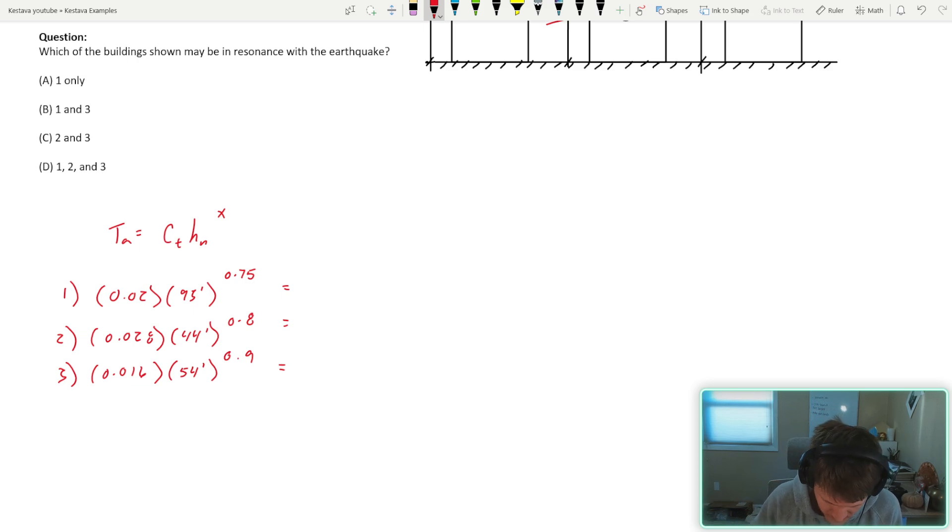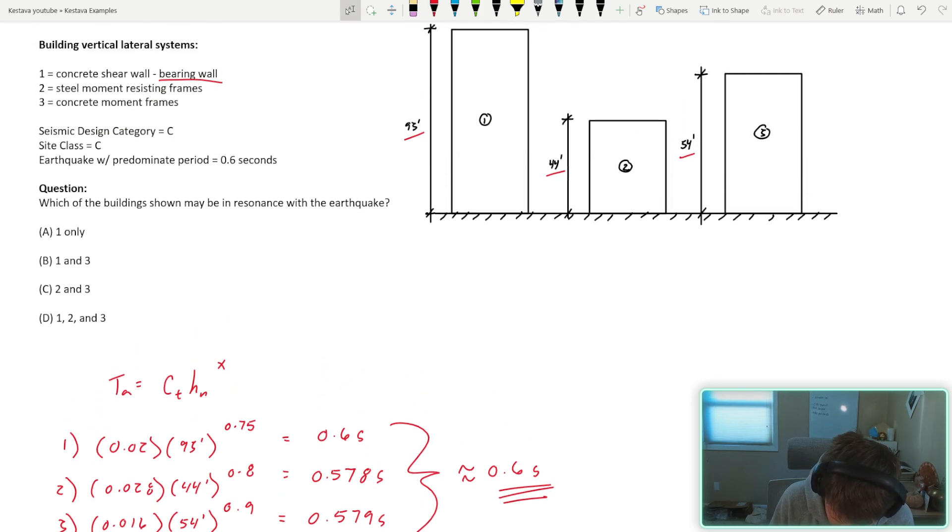With everything plugged in, we get 0.6 seconds, 0.578 seconds, we'll get a little more sharpening of the pencil, 0.579 seconds. So all of these in my opinion really land on an approximate period equal to 0.6 seconds. Well, that's no bueno because our earthquake that we're experiencing has a predominant period of 0.6 seconds. So it is very likely in my opinion that all three of these different structures of different heights, of different lateral systems, are going to resonate with that earthquake, which is not a great thing. For today's answer I would say it's D: it's one, two, and three.